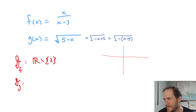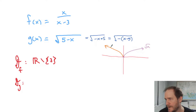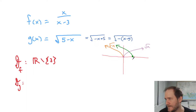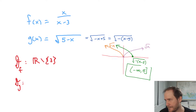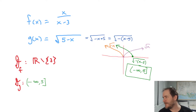The parent function root x goes like this, but that negative in front flips us over the y-axis — so here's root of negative x. Then the minus five pushes us five units to the right. So here's the actual given function: the square root of the opposite of x minus five. If you think through all those transformations, it becomes clear that the domain is negative infinity up to five, including five.